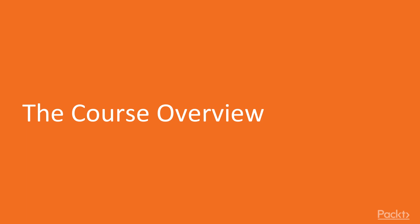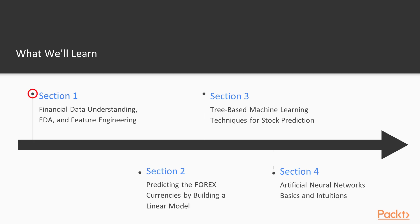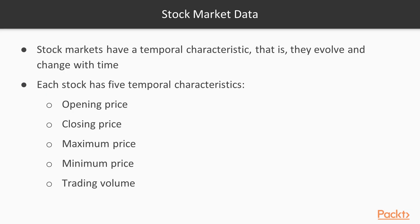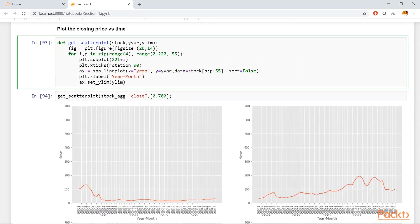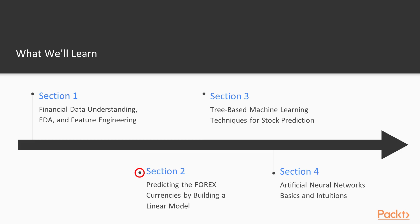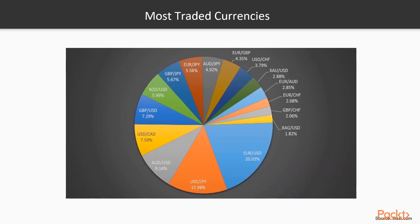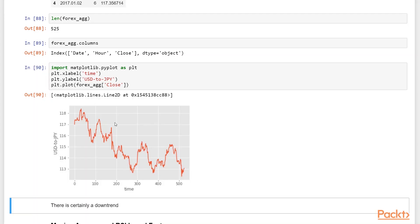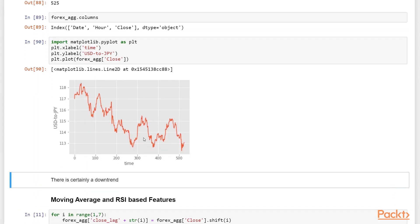In this course, I will be taking you on a 7-part journey. We will begin by understanding financial data and exploratory data analysis, learning how to relate certain features with each other and identify the best features for building a machine learning model. After that, the second section will cover linear model building and tuning for forex currencies, where we will learn about one of the most important asset classes — forex currencies — and how to build a linear regression model to predict them.